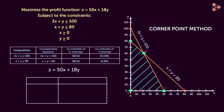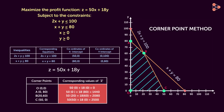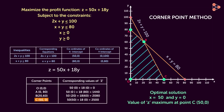We will evaluate the objective function by substituting these points as values of x and y one by one. First, let's find the value of Z at point O. The coordinates of point O are (0, 0), so 50 times 0 plus 18 times 0 gives us 0. Likewise, we get the value of Z as 1440 for the second point, 2080 for the third, and 2500 for the fourth point. Since our objective is to maximize Z, the optimal solution lies at point C (50, 0) because the value of Z is maximum at point C.